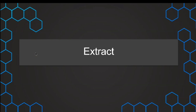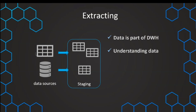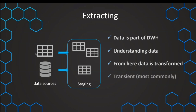We now want to dive deeper into extracting the data. We need to extract the data from the data sources into our staging layer, and once we've done that, the data is already part of our data warehouse. We do this to not put any unnecessary load on the source systems — they are productive systems and we cannot risk slowing them down or using them to work on and understand the data. Therefore, we need to have the data in our staging environment, where all the data is finally available in SQL tables.